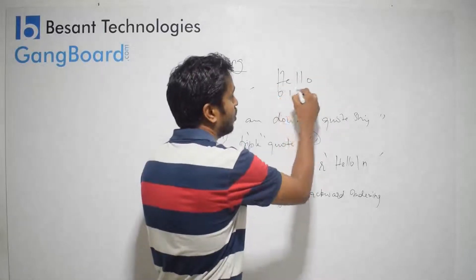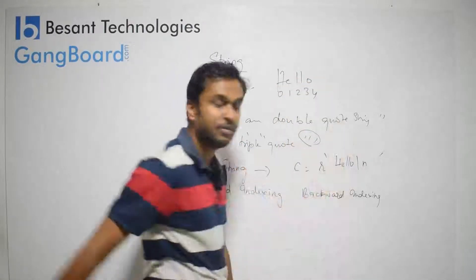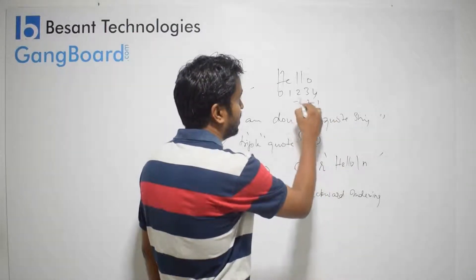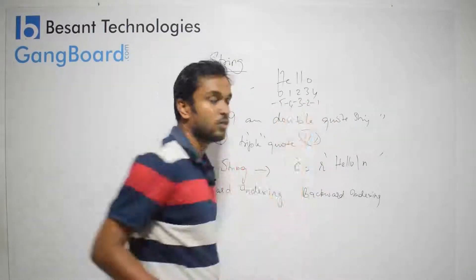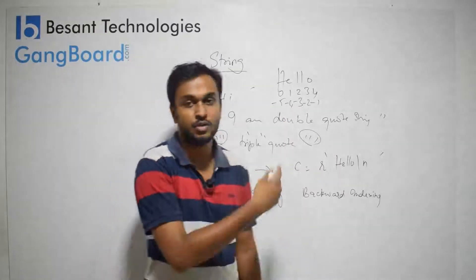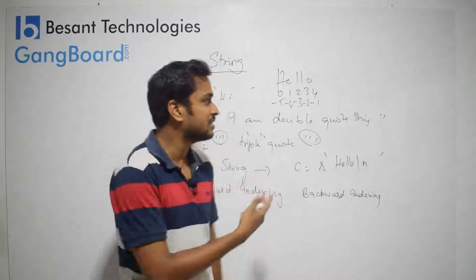0, 1, 2, 3, 4 - automatically that index is created. This is forward indexing, backward indexing. Minus 1, minus 2, minus 3, minus 4, minus 5. So start length, you can take back length. You can use for a negative indexing.